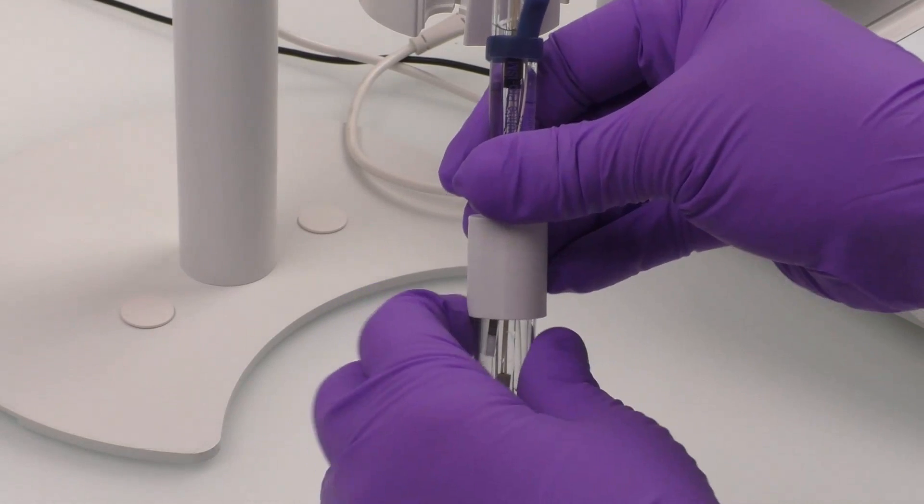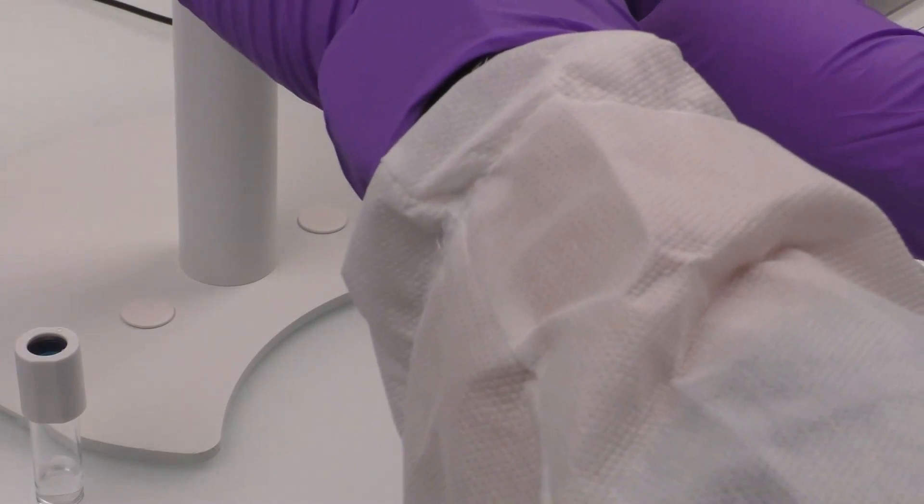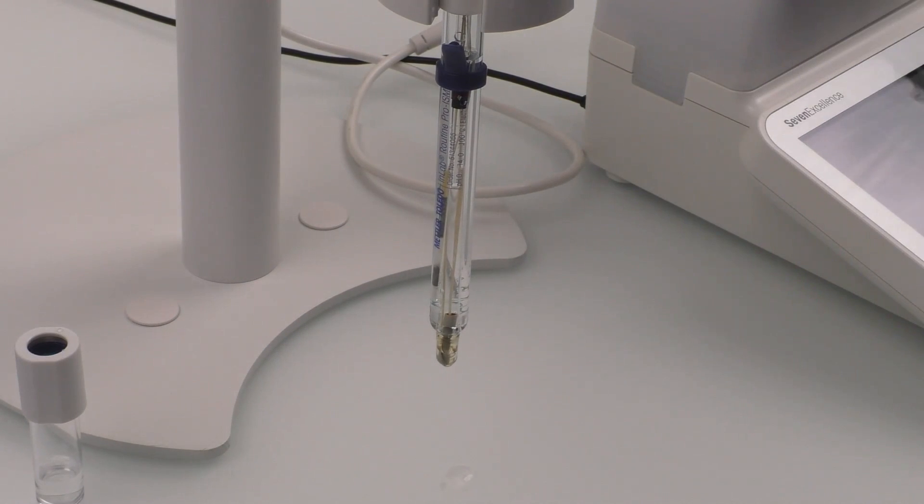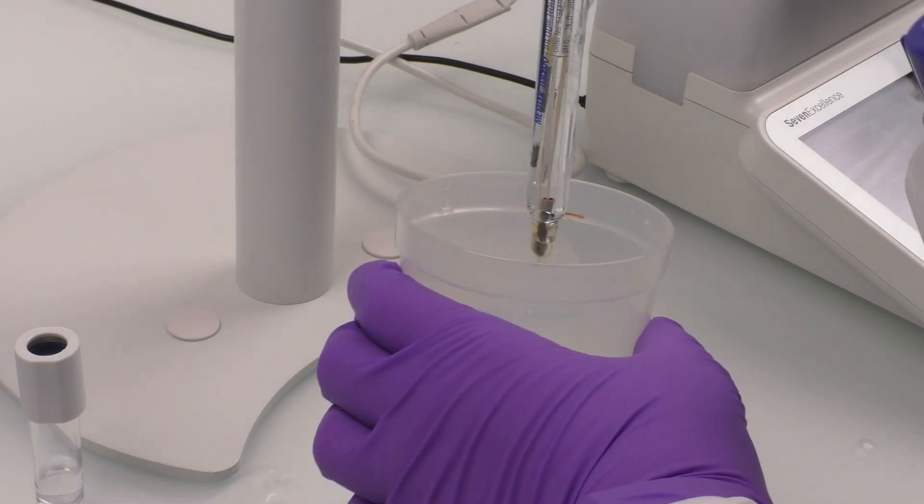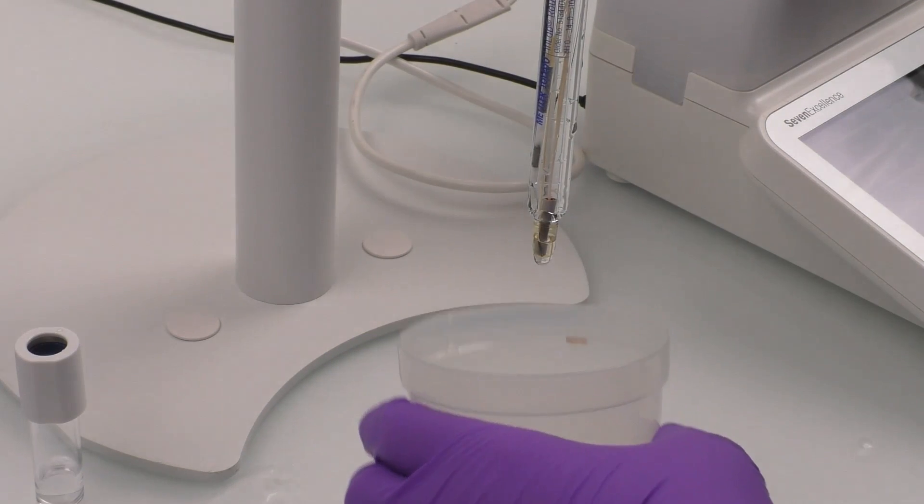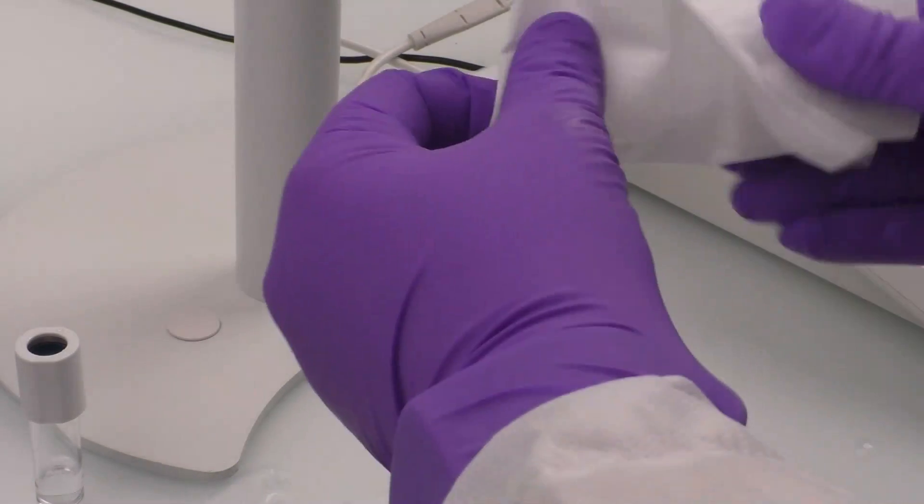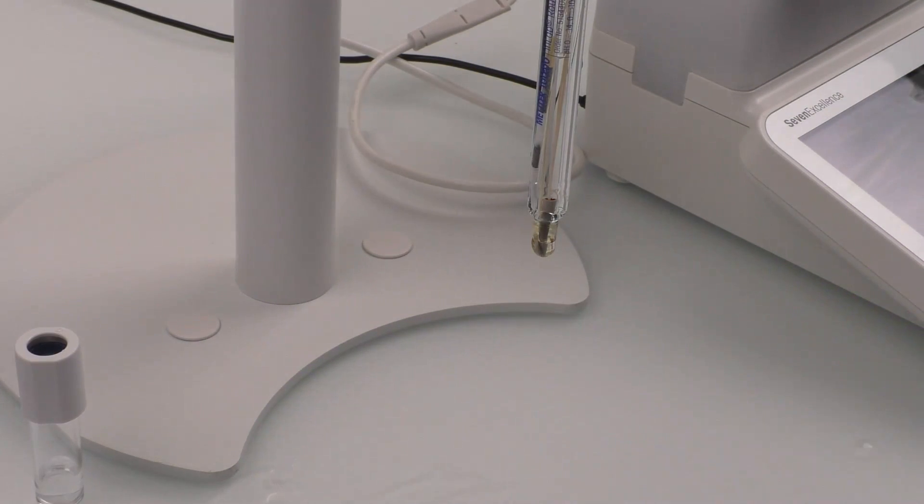Then, carefully remove the wetting cap and place it aside. Next, place a waste beaker under the sensor and rinse the sensor with deionized water, dabbing it dry with a tissue. Your sensor is now all set and ready for calibration.